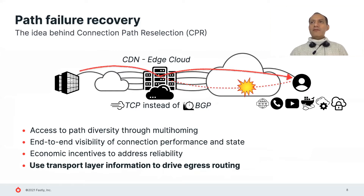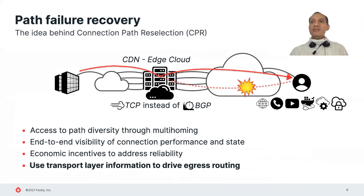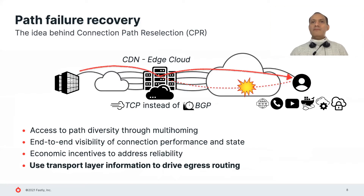By moving the responsibility of path failure recovery from BGP to TCP, CPR can mitigate problems in the RTO timescale — seconds rather than minutes. By operating on individual connections, it can protect all destination prefixes instead of just a few heavy hitters. Additionally, since CPR reuses the connection state already available in the host socket table, it does not need to reconstruct it from in-network observations. CPR is not intended to be used for generic performance-aware traffic management, but to complement it. It is a last-resort intervention aimed to rescue TCP connections that would otherwise be lost.